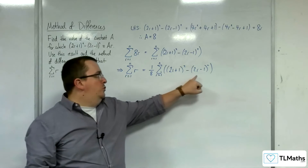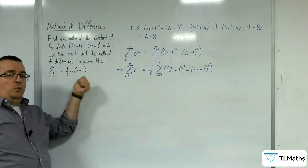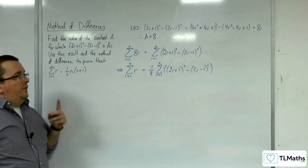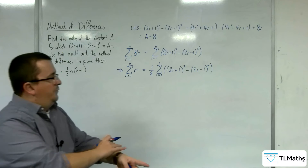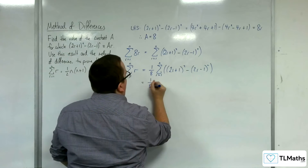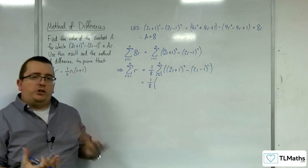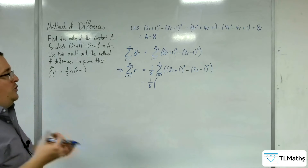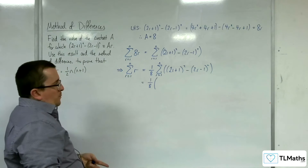My job is to show that this is equivalent to ½n(n+1). That's what this situation has boiled down to. So let's leave the one eighth where it is and open up a bracket. I'm going to start substituting these r values in, writing down the terms as they go.